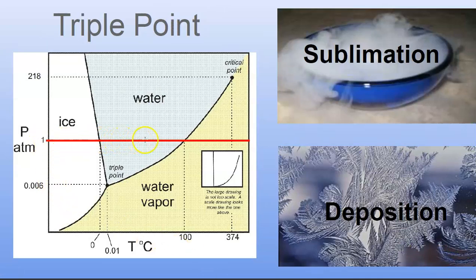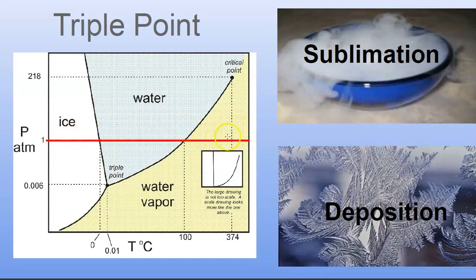Here's an interesting phase diagram. This red line marks pressure at one atmosphere — everyday life. At 1 atm, water can be solid ice, and as you heat it the temperature rises until it transitions from ice to liquid water at the melting point, then finally to gas when it boils. That's what we're used to.